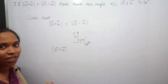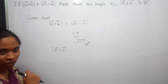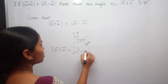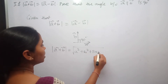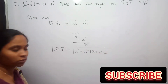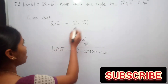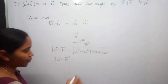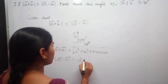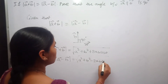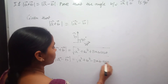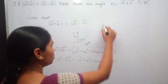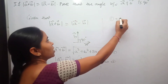The magnitude of a+b is given as the square root of a² + b² + 2ab cosθ — this is equation 1. And the magnitude of vector a−b is equal to the square root of a² + b² − 2ab cosθ — this is equation 2.